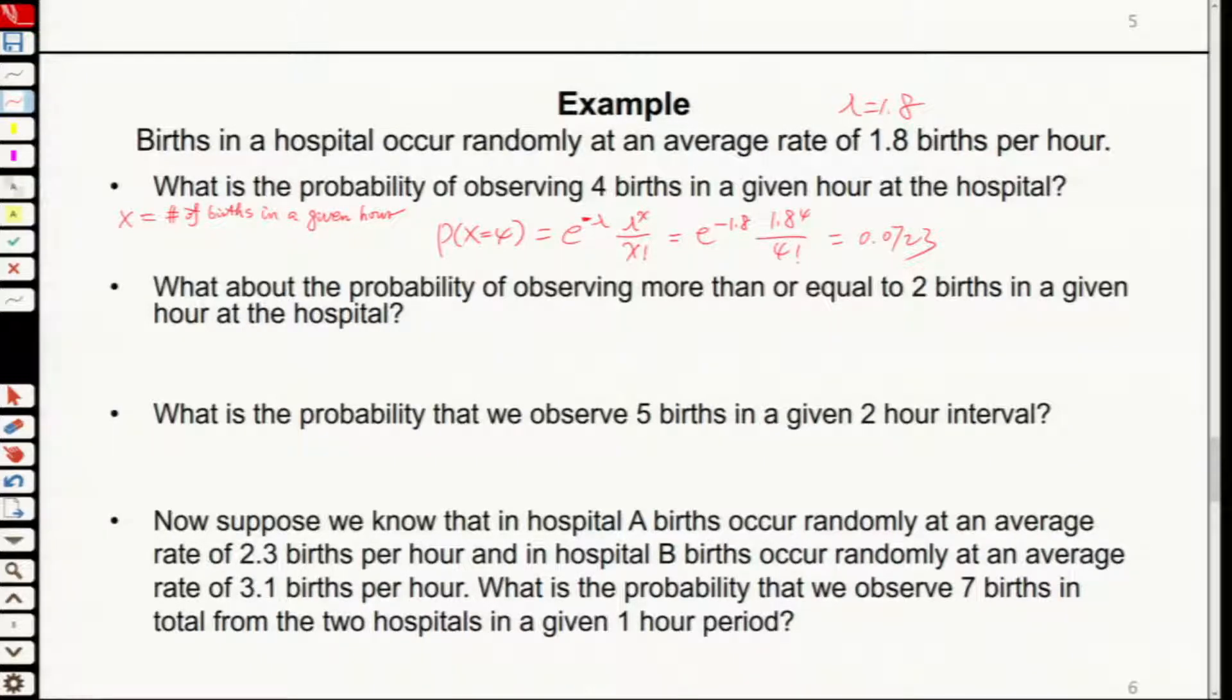This is the basic definition of Poisson distribution. I think you've learned this before, but let's refresh our mind about changing the intervals. What about the probability of observing more than or equal to two births in a given hour at the hospital?